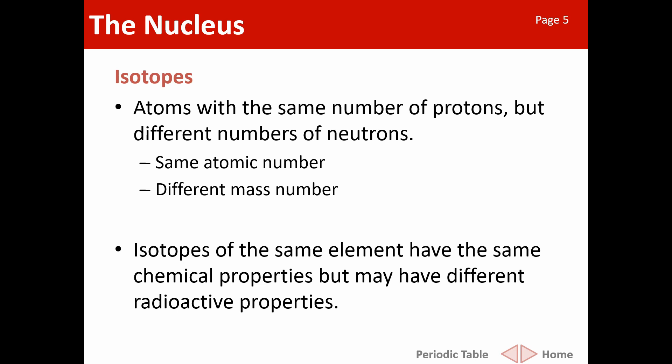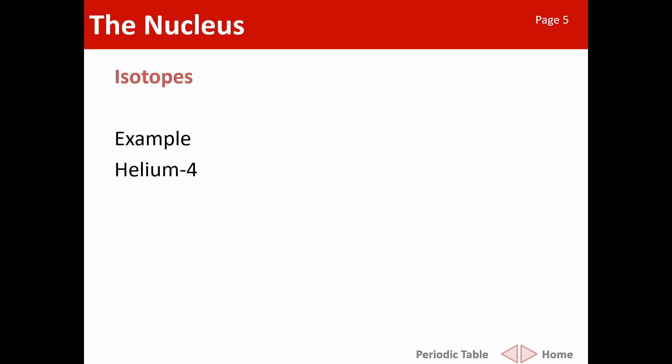For example, you can have different versions of carbon. Some of the carbon in your body is carbon-12; a certain percentage will be carbon-14. Chemically they do exactly the same thing, but they will have differences when it comes to radioactive properties. As an example, helium-4 is normal helium — it has two protons and two neutrons, so an atomic number of two and a mass number of four. We can also have the rarer helium-3, which has two protons and one neutron for an overall mass number of three.